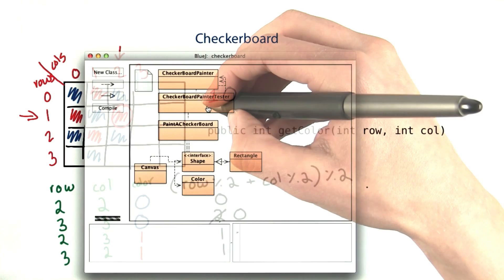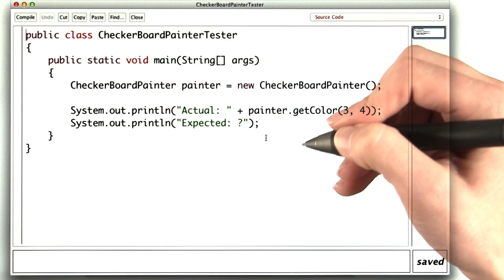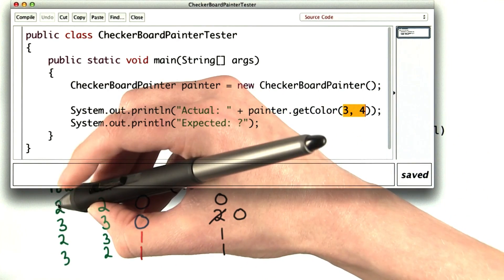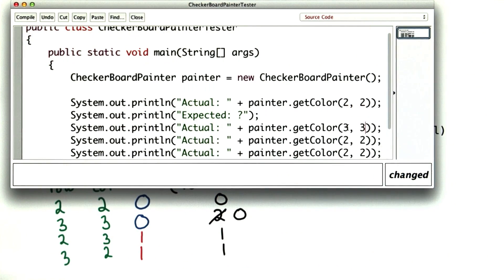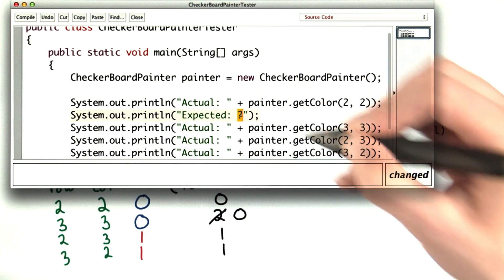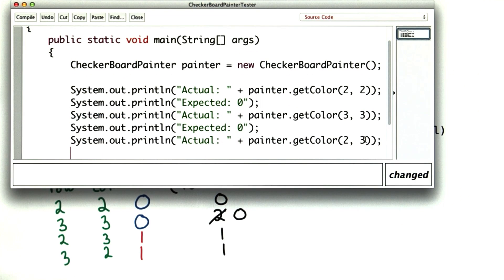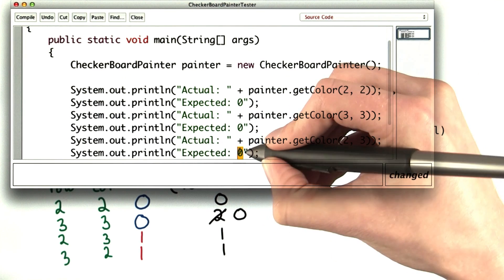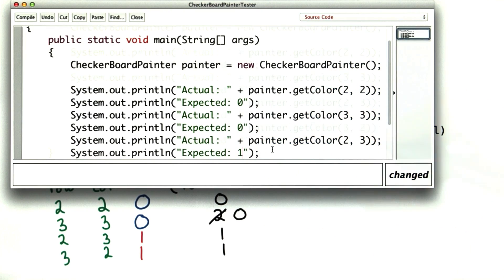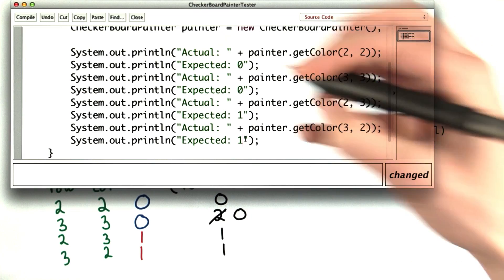Let's test it out in BlueJ. First, I'll check my test and put some actual values in it. The test cases I came up with were 2, 2, 3, 3, 2, 3, and 3, 2. For 2, 2, I expected 0. And I expected the same thing for 3, 3. At 2, 3, I expected 1, and at 3, 2, I also expected 1. So my tester should be good to go.